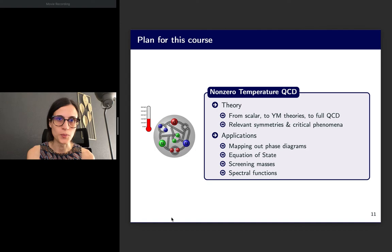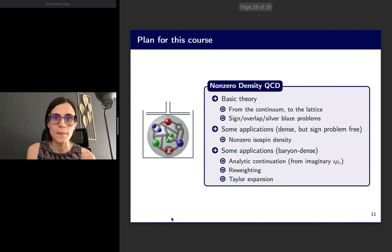It's probably time to tell you what is the plan for the rest of this course. We will start by focusing on QCD at non-zero temperature only—zero density or zero chemical potential. We will discuss a little bit about the theory and the background, what are the relevant symmetries and the critical phenomena that we expect to witness. Then I will discuss with you some applications in this domain. In particular, how do we go about mapping out the phase diagram? How do we go about measuring the equation of state, looking at the thermodynamics of this kind of system? We will also discuss screening masses as well as spectral functions.